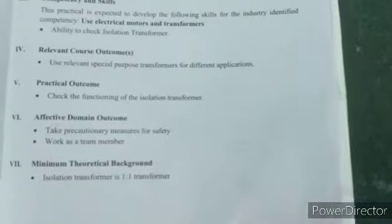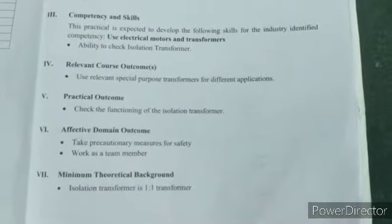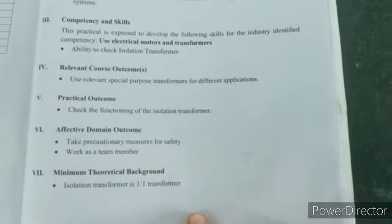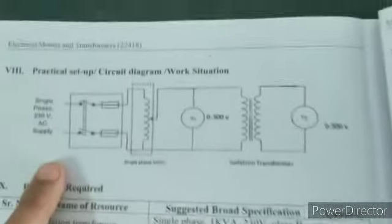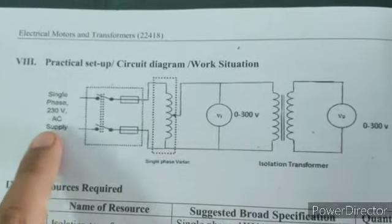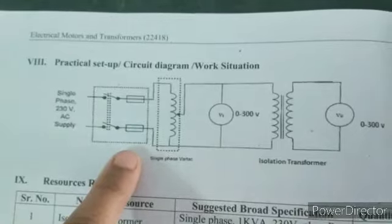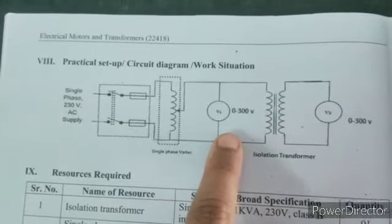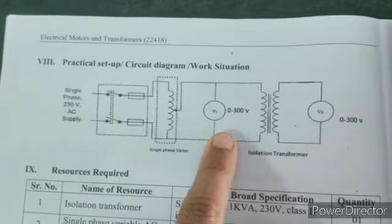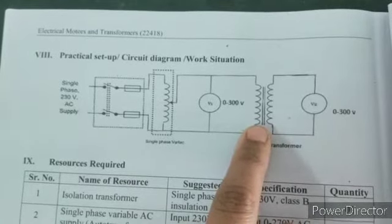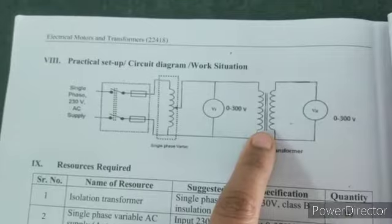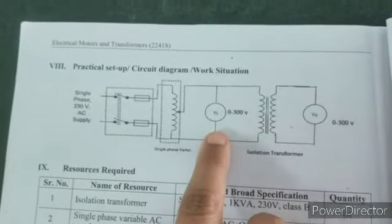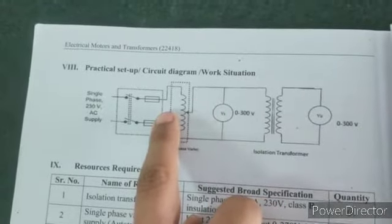What is called an isolation transformer and what is its function? Isolation transformer is a 1:1 transformer in which whatever voltage you give on the input side, you get the same voltage on the output side — which we are going to see in this practical. This is the circuit diagram of isolation transformer. You can see single phase AC supply is connected to our single phase variac. Single phase variac is also called auto transformer. Voltage source is always connected in parallel in the circuit diagram. This is the symbol of the transformer — a one-to-one transformer — where voltage is connected in parallel on the primary side and a voltmeter is connected on the secondary side, with one connection going to the common of the auto transformer.